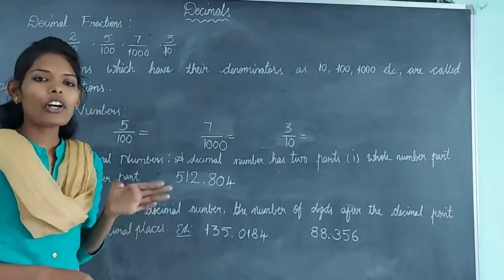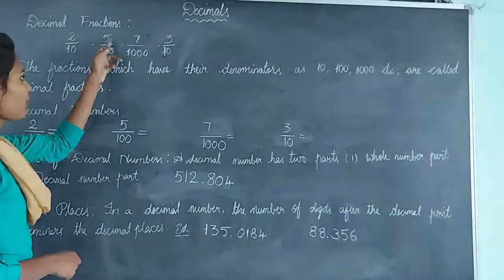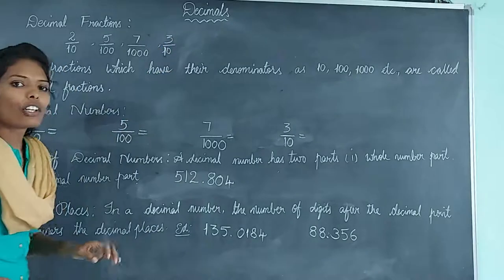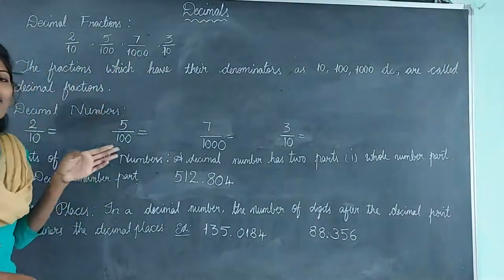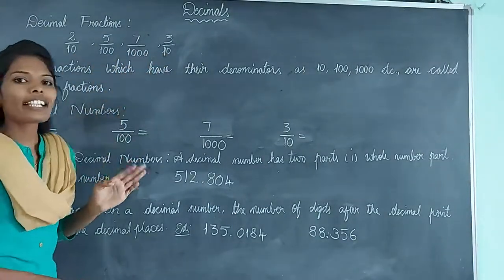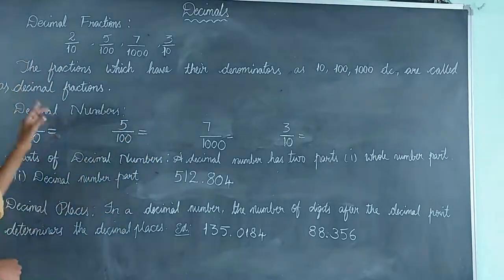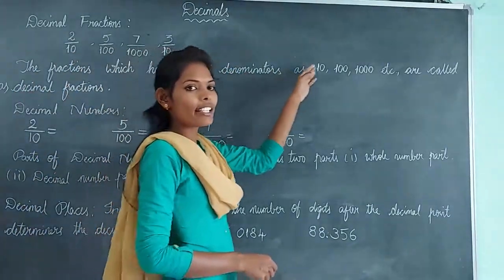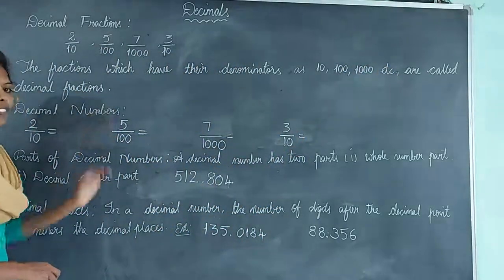We already know about fractions. Here we have the fractions 2 by 10, 5 by 100, 7 by 1000, and 3 by 10. First we have to observe the denominators — 10, 100, 1000, and 10. These are multiples of 10. So the fractions which have the denominators as 10, 100, 1000, etc. are called decimal fractions.